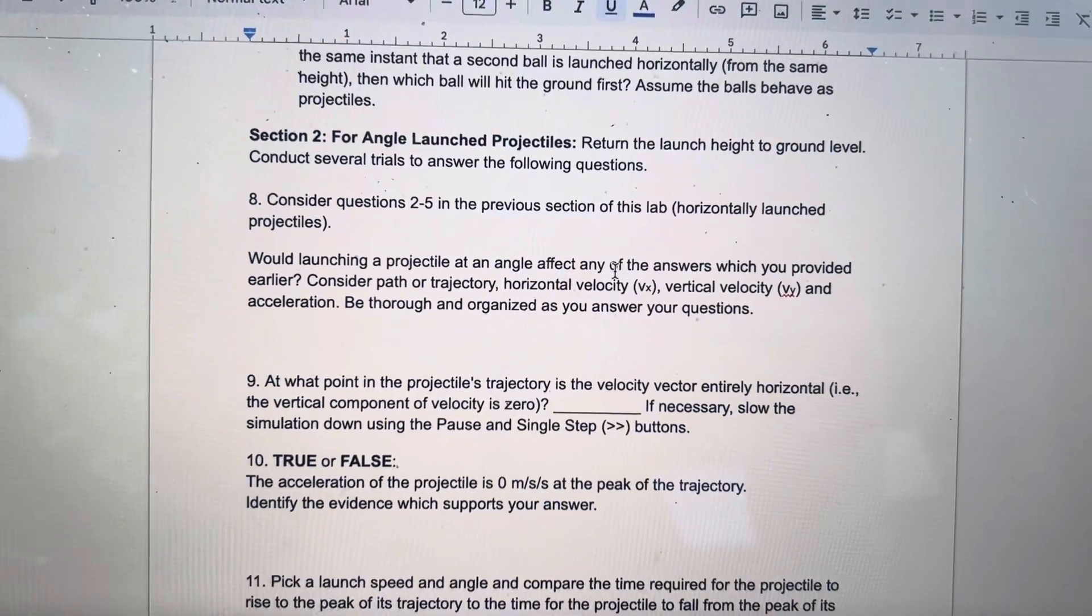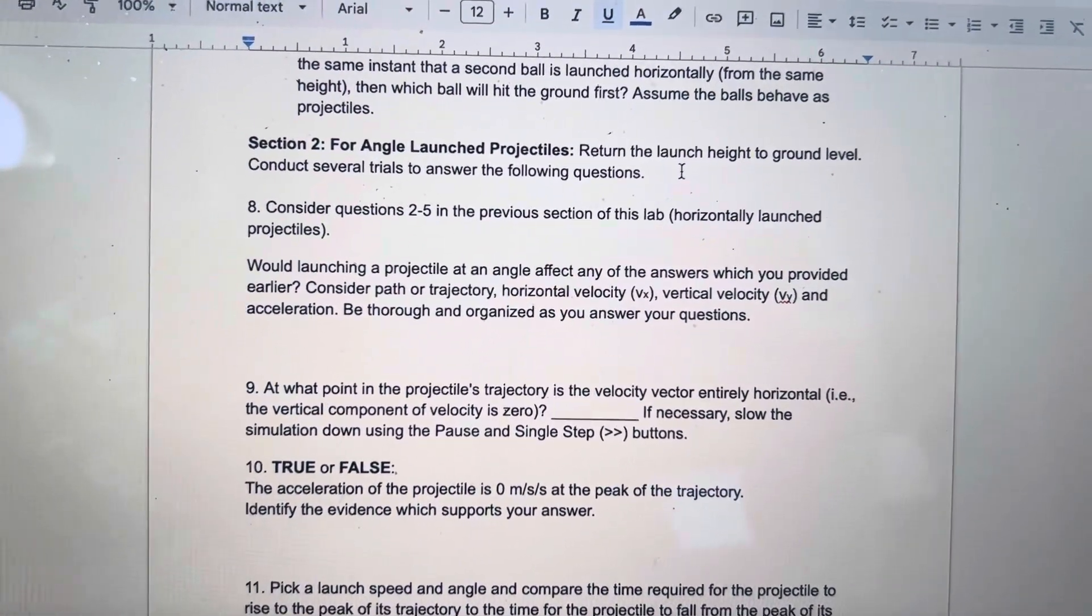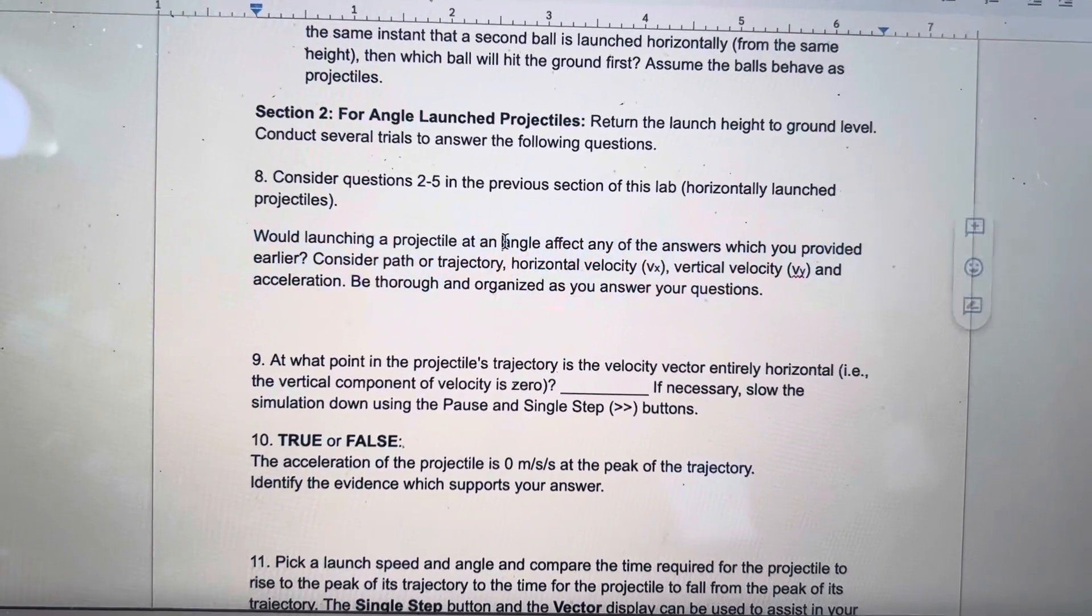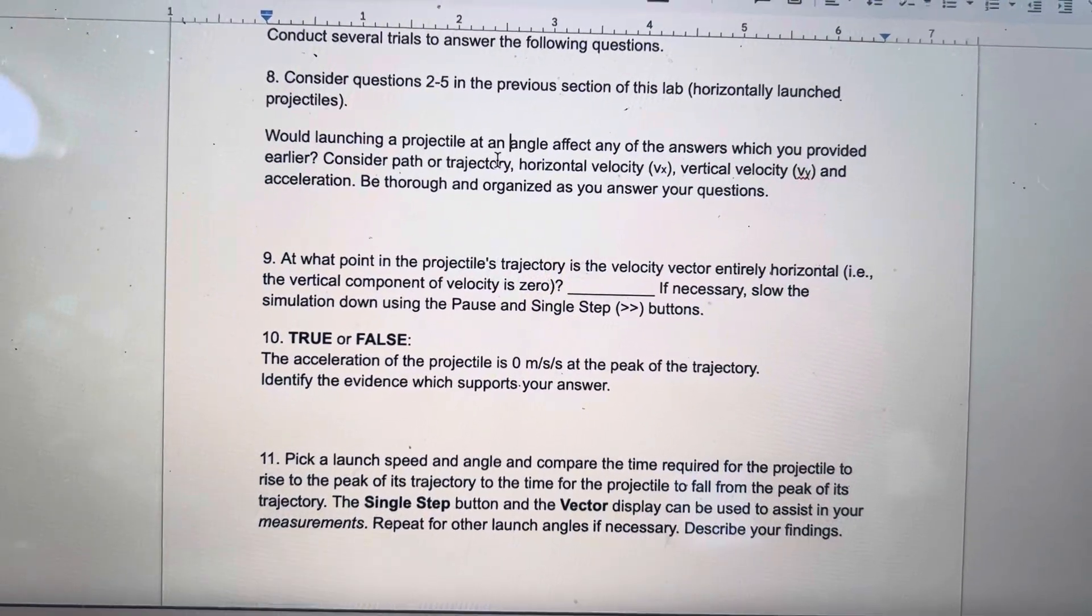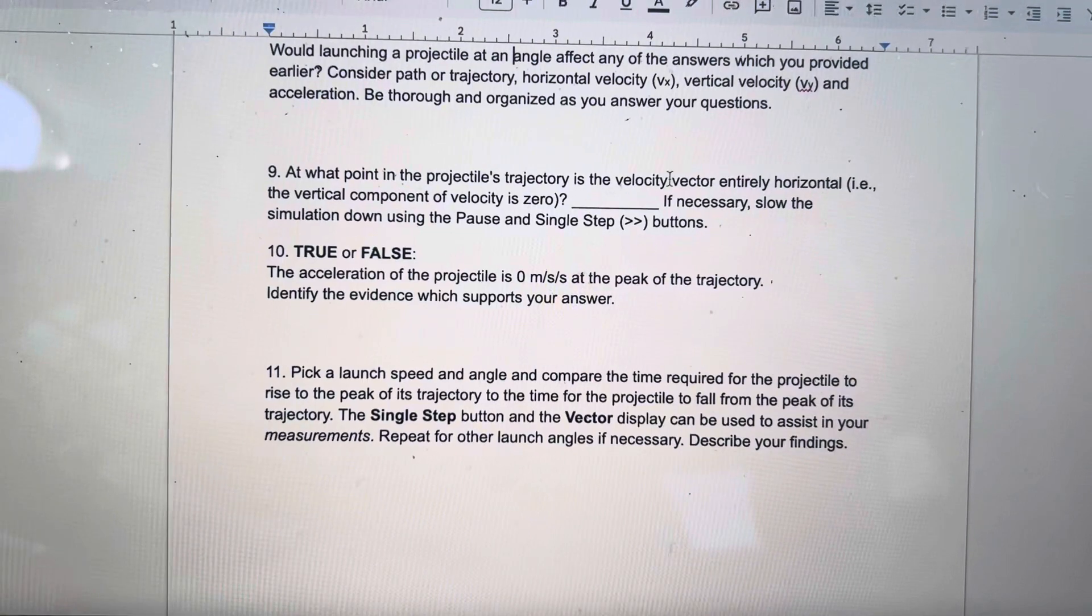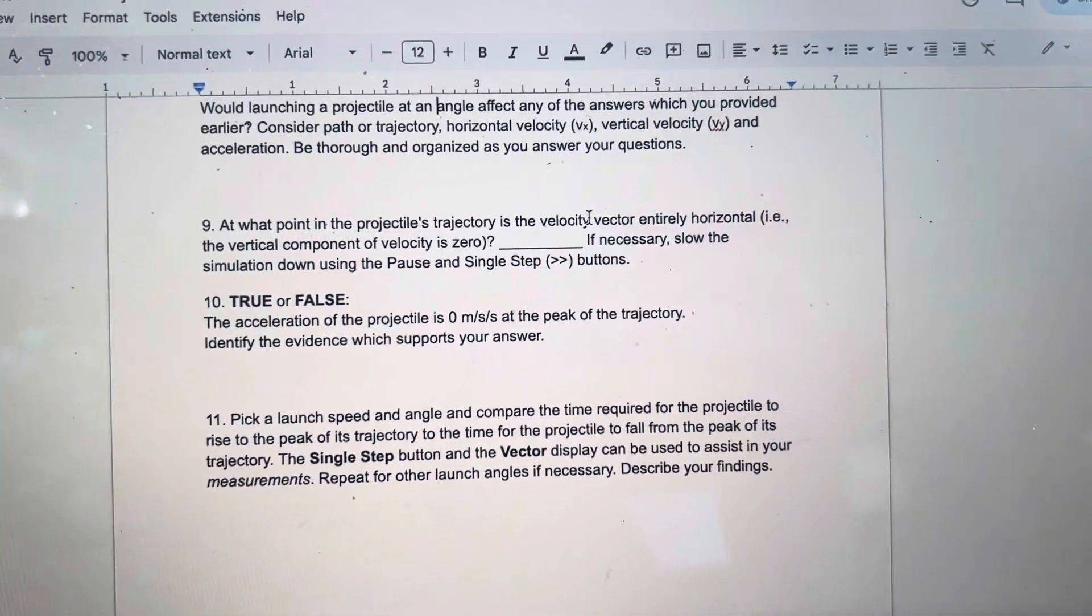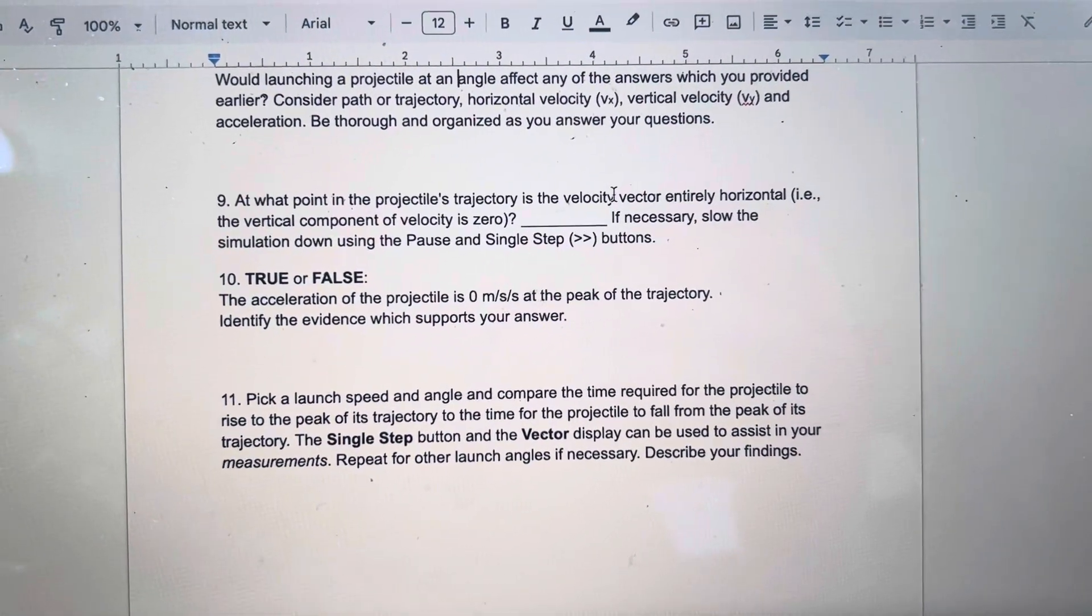For angle launch, that's what I showed in our demonstration. You want to put your thing back on the ground and try out some different angled launches, then answer these questions. Does that change anything? Where is the vertical velocity zero? Think about the path - where is the vertical velocity, the upwards component, zero?